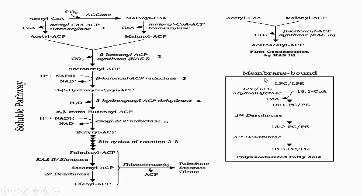In this particular membrane-bound pathway, we have lysophosphatidylcholine and lysophosphatidylethanolamine transferases, which act on the 18:1 acyl group. We remove one CoA to form phosphatidylethanolamine and phosphatidylcholine. These are also acted upon by desaturases, which introduce another double bond, and then a delta-15 desaturase introduces yet another double bond.